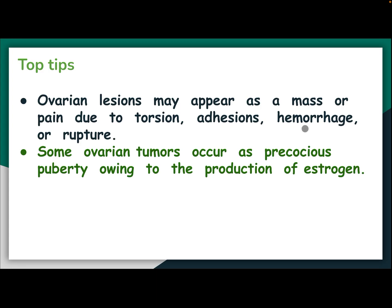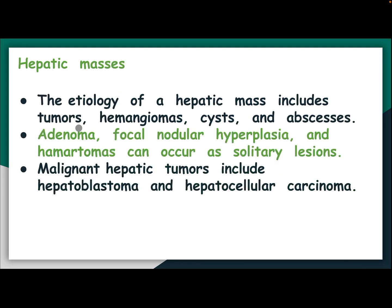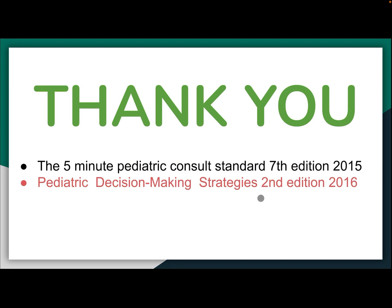Ovarian lesions may appear as a mass or pain due to torsion, adhesion, hemorrhage, or rupture. Some ovarian tumors present with precocious puberty owing to the production of estrogen. Regarding hepatic masses, the etiology includes tumors, hemangioma, cysts, abscesses, adenoma, focal nodular hyperplasia, and hematoma, which can occur as solitary lesions. Malignant hepatic tumors include hepatoblastoma and hepatocellular carcinoma.